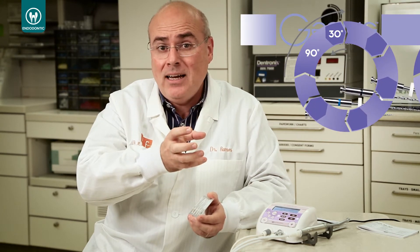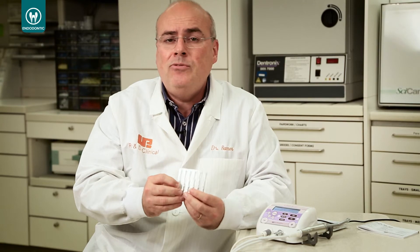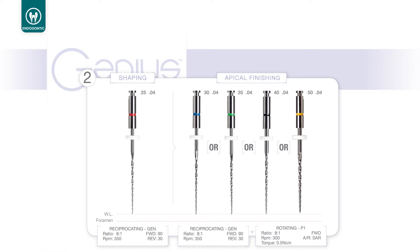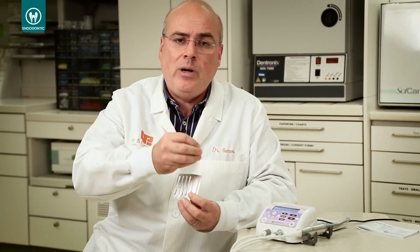We have a sequence of files that we recommend to be used with the GENIUS motor. These files in reciprocation will work in 90-30. It means 90 degrees clockwise cutting, 30 degrees counterclockwise releasing. This is very important because we can avoid all the stress being built in the file during the procedure. Plus, we just need two files to do all the procedure. After pre-flaring with the orifice shaper, we will use the 2504 file, the red one, first until the working length, opening space in reciprocation. It means that in this way you increase the safety of the procedure.